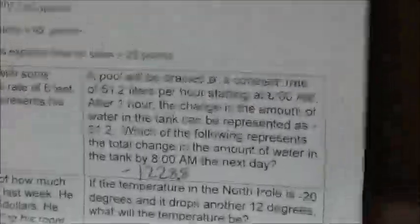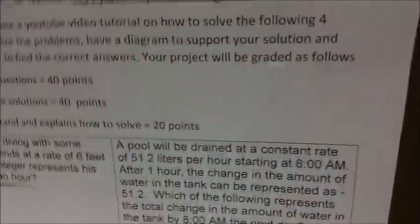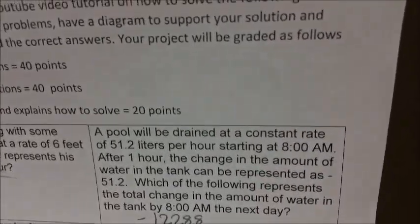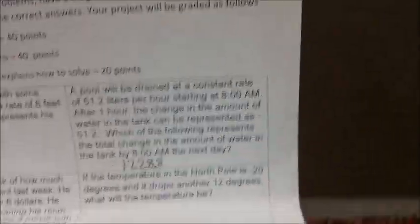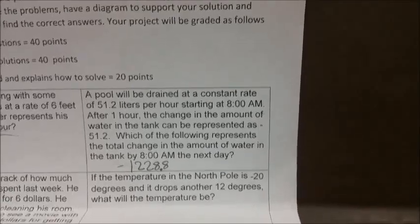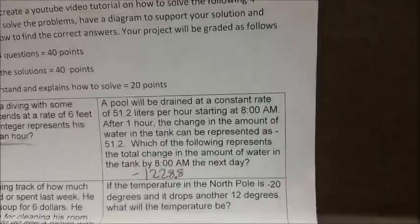Okay, so first we're going to be doing this problem right here. A pool was drained at a constant rate of 51.2 liters per hour starting at 8 a.m. After one hour, the change in the amount of water in the tank can be represented as -51.2.